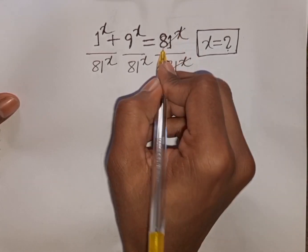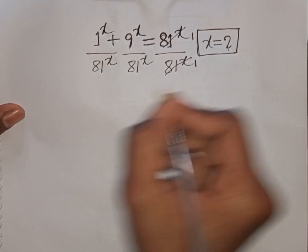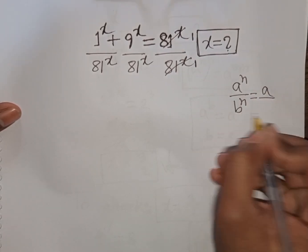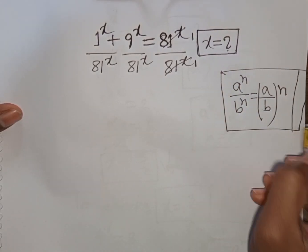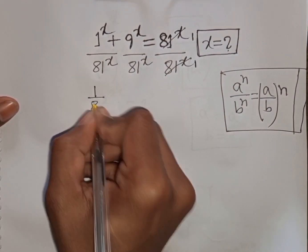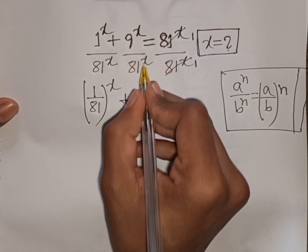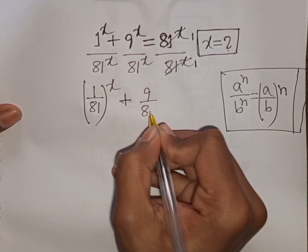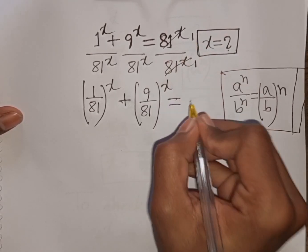The 81 power x terms cancel, leaving 1 on the right side. Now we see x, x — same power but different base. According to the formula a power n over b power n equals (a/b) power n, I can write 1 over 81 bracket power x plus 9 over 81 bracket power x equals 1.